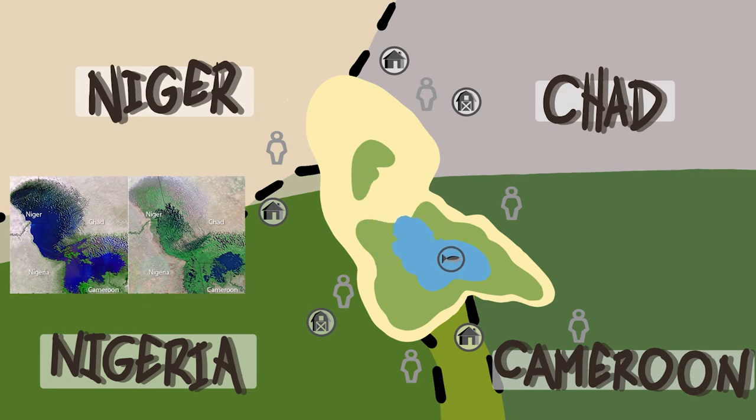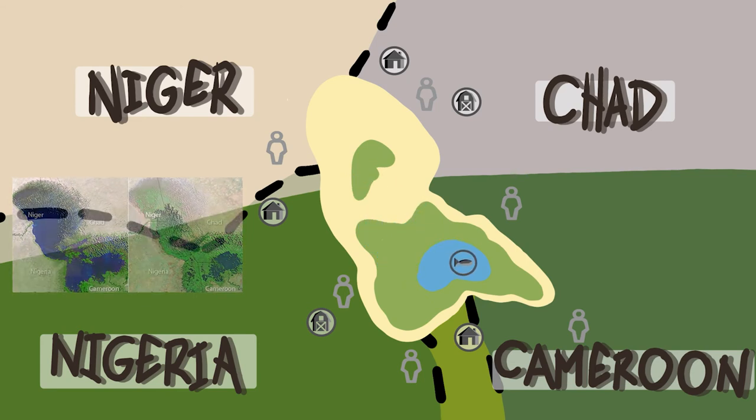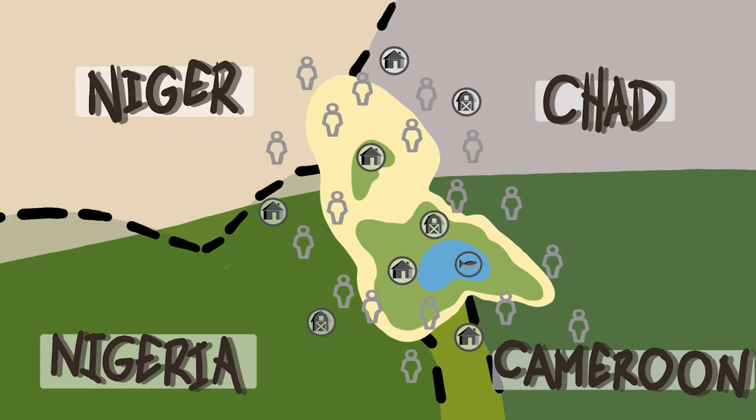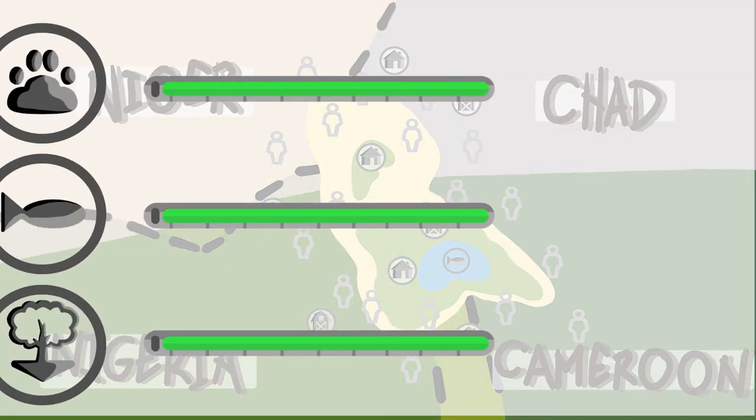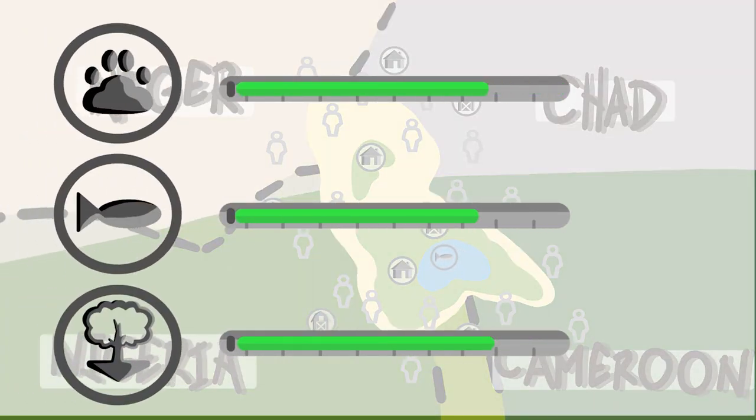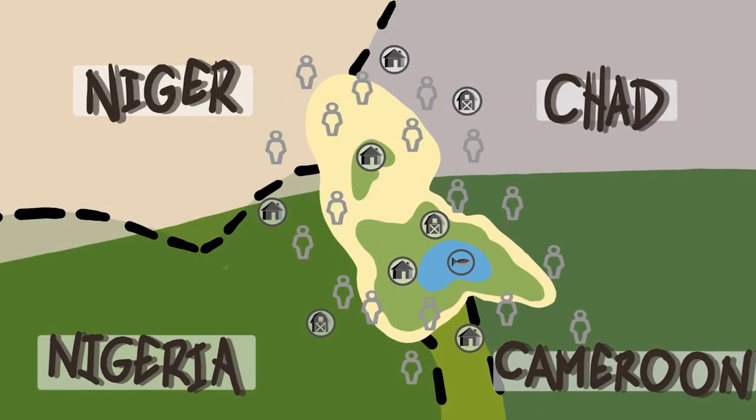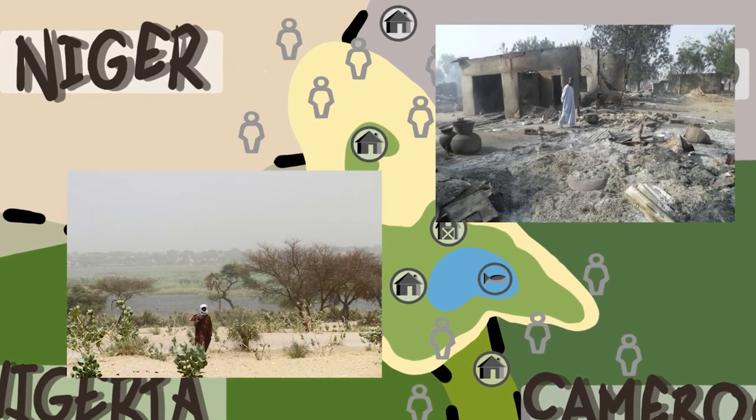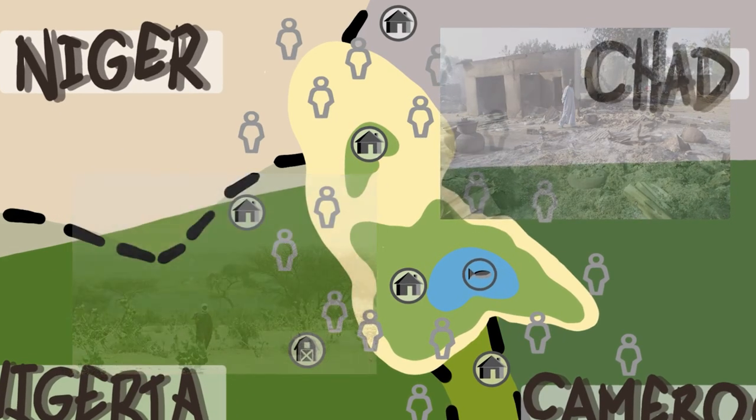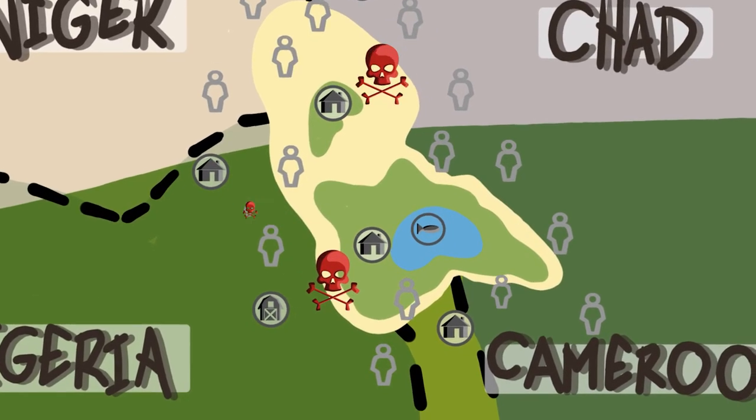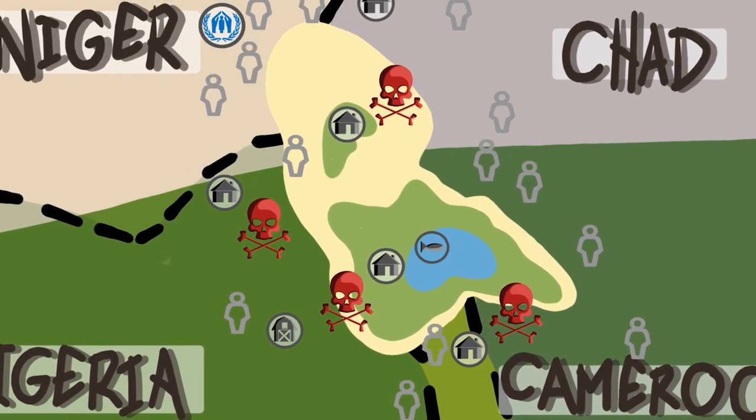In that same timeframe, the local population tripled, making the lake an unsustainable food source. Food production became scarce for this now 30 million inhabitant region. This crisis has led to horrific levels of poverty across the region, culminating in the proliferation of the terrorist group Boko Haram and the generalized refugee crisis.